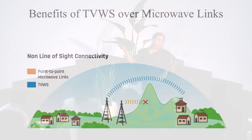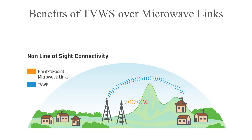80% of India is hilly, so the terrain is very difficult and it's very hard to lay optical fiber to reach villages. The possible solution we are working on — and have already worked on — is connecting villages through TV white spaces.